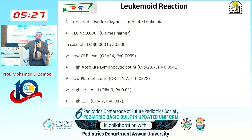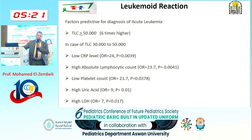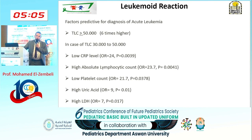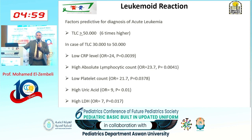Therefore, they found that when the total leukocytic count is ≥50,000, this is predictive of acute leukemia, because the diagnosis of acute leukemia in those cases was six times more than in cases with WBC from 30,000 to 50,000. For children with WBC from 30,000 to 50,000, if certain factors are present — lower CRP, high absolute lymphocytic count >10,000, low platelet count, high uric acid, or high LDH — we should also consider acute leukemia as a possible diagnosis.